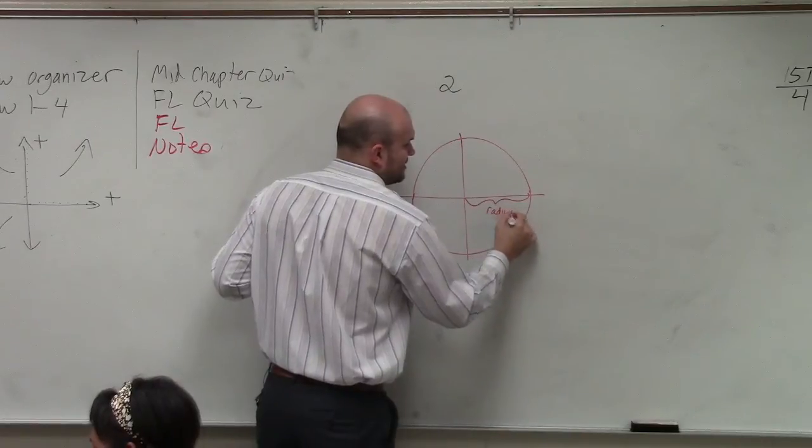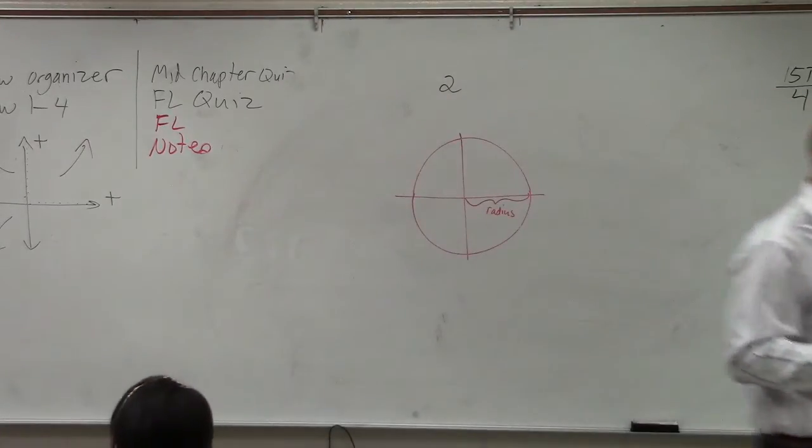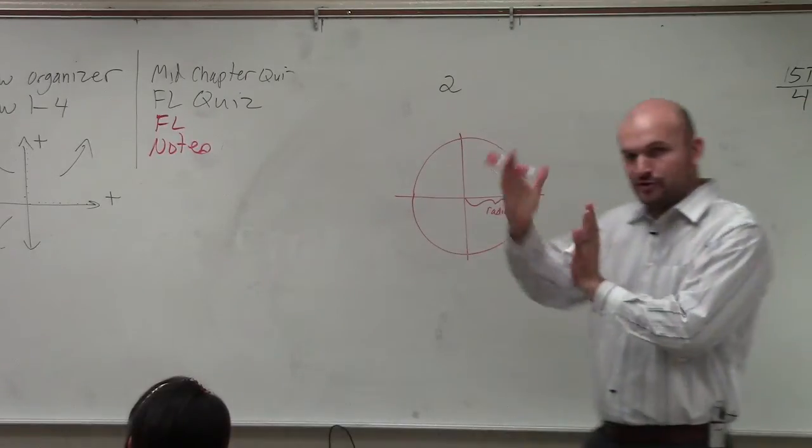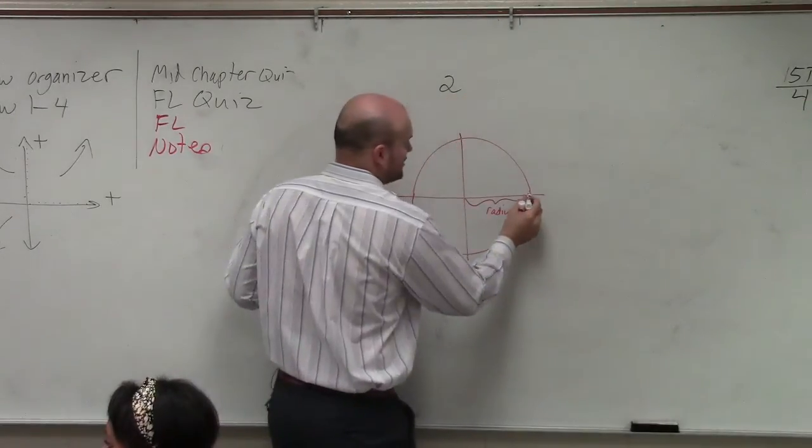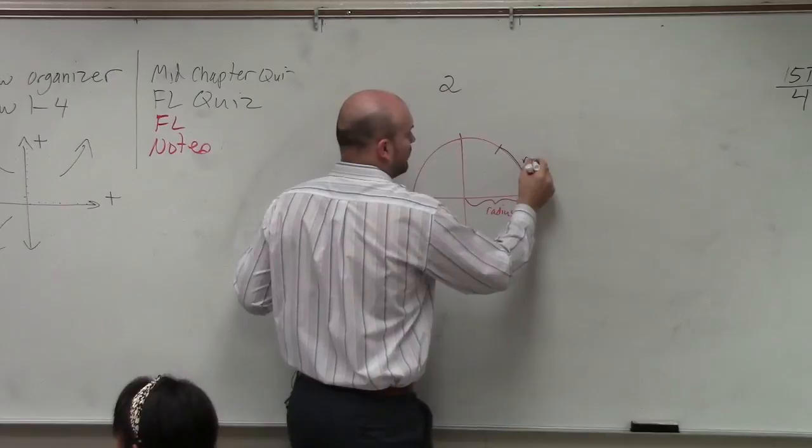That was your radius. And if you take your radius and put it in hot water so you can wrap it around the circle, we created the distance of one radian.